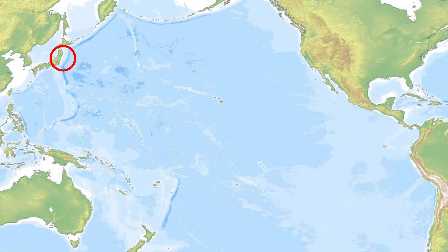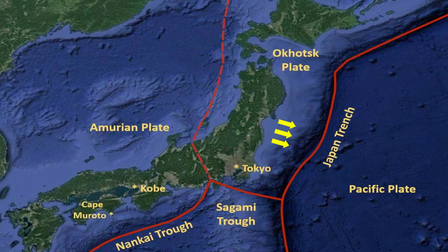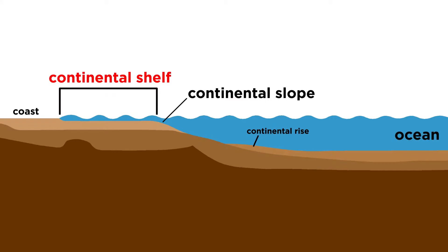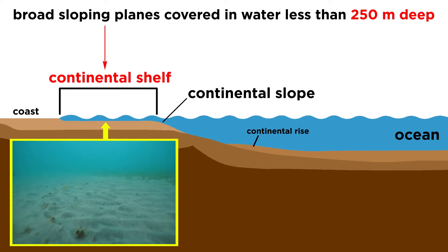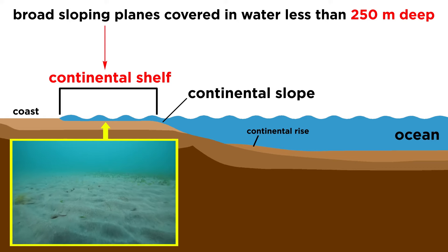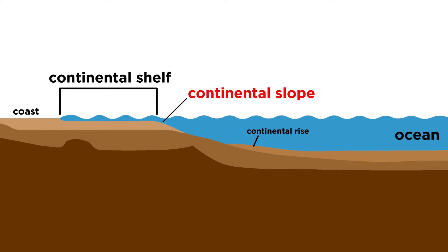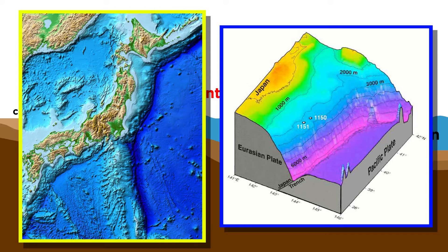The western edge of the Pacific Ocean starts with a ramp of continental crust that extends off the coast of mainland Japan to the Deep Japan Trench. Scientists call this ramp of continental crust beneath the ocean the continental shelf. Typically, continental shelves are broad sloping plains covered in shallow ocean water less than 250 meters deep, but in the Pacific Ocean, the gentle gradient of the continental shelf drops off quickly into a steep incline called the continental slope. Off the coast of Japan, the continental slope extends all the way down to the bottom of the Japan Trench, over 7 kilometers in depth.